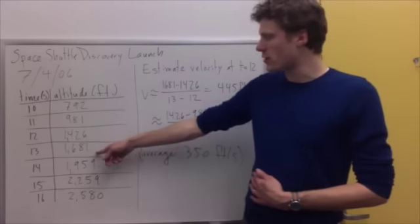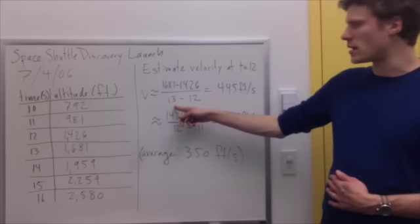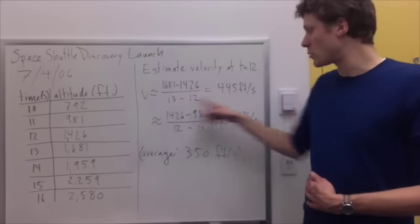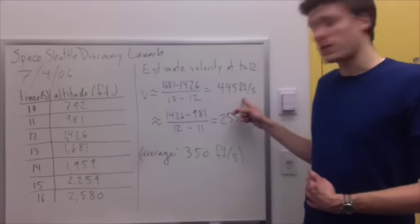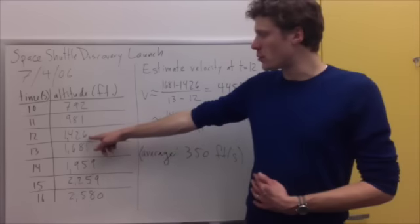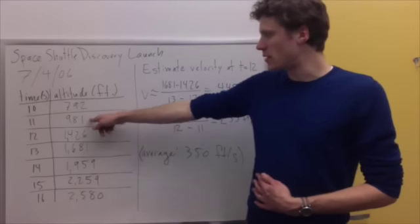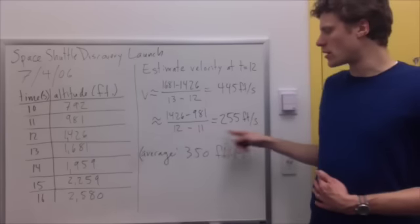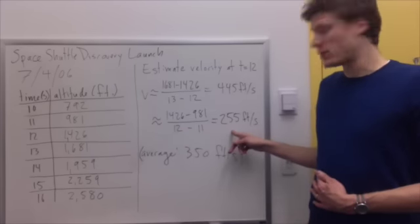So maybe I'll look between 13 seconds and 12 seconds, where I get the average velocity is equal to 445 feet per second. Or if I look at the interval between time t equal to 12 and t equal to 11, I get this quantity, which gives me 255 feet per second.